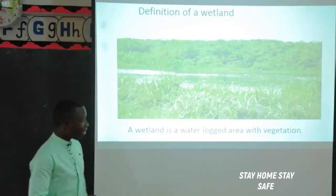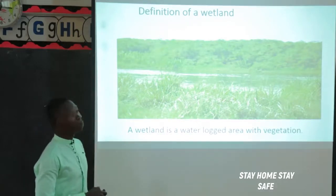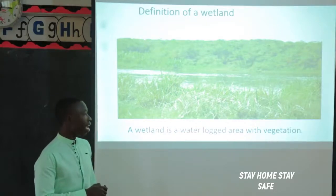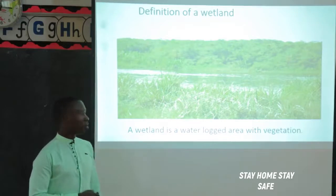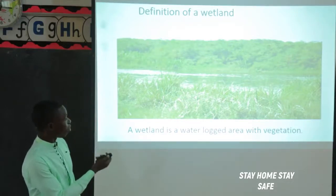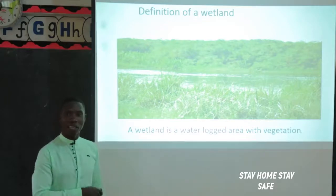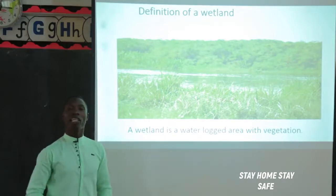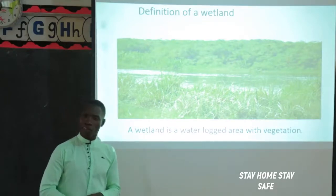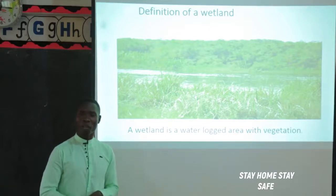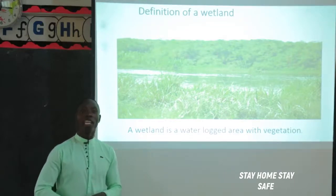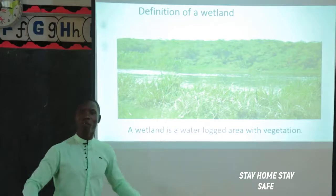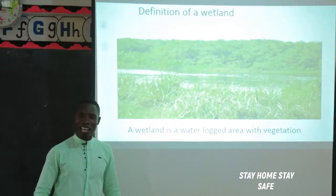A swamp is a waterlogged area with vegetation. This place has water and vegetation grows in it. As you can see here, this is how a swamp looks like. It has water in it, and there is vegetation growing in it. That is a wetland or a swamp. Have you seen any? We have one in Kampala - have you ever heard of Lubiji Swamp?